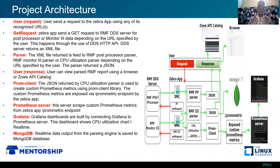The project architecture: Zebra takes a simple approach in converting RMF XML data into JSON format. Everything starts with the user's request. Whenever a user sends a request to Zebra, it is passed to the RMF DDS server, which returns an XML file. This file is converted into JSON format within Zebra, and the JSON data can be returned to the user through the browser or API catalog, stored into MongoDB, or converted into custom Prometheus metrics stored in a Prometheus server, which can be connected to Grafana to plot real-time charts.